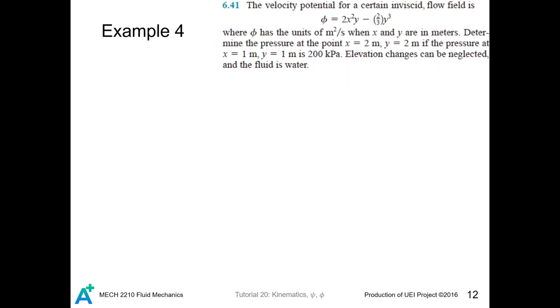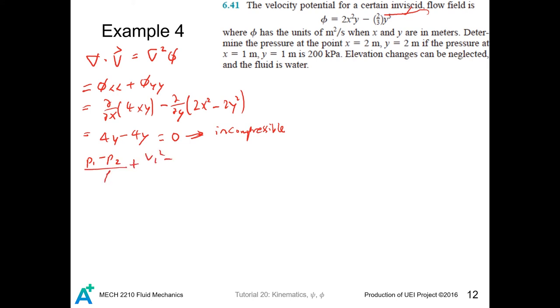So let's work on an example about this. So the flow is inviscid and, of course, steady since the time does not appear in the velocity potential. And then the flow must also be irrotational since the velocity potential exists. So what's left is the incompressible requirement. Let's check if the flow is incompressible. So let's go on and calculate the divergence, and that is the Laplacian of the velocity potential. So the flow is incompressible. So the Bernoulli equation is applicable. Let's write that down. And elevation change can be neglected, so this becomes zero. And let's let this point as one and this point as two.